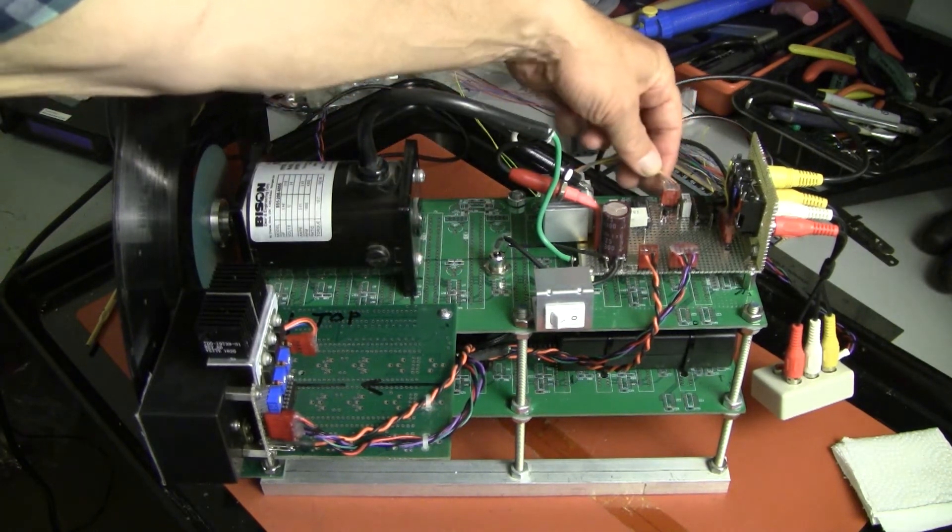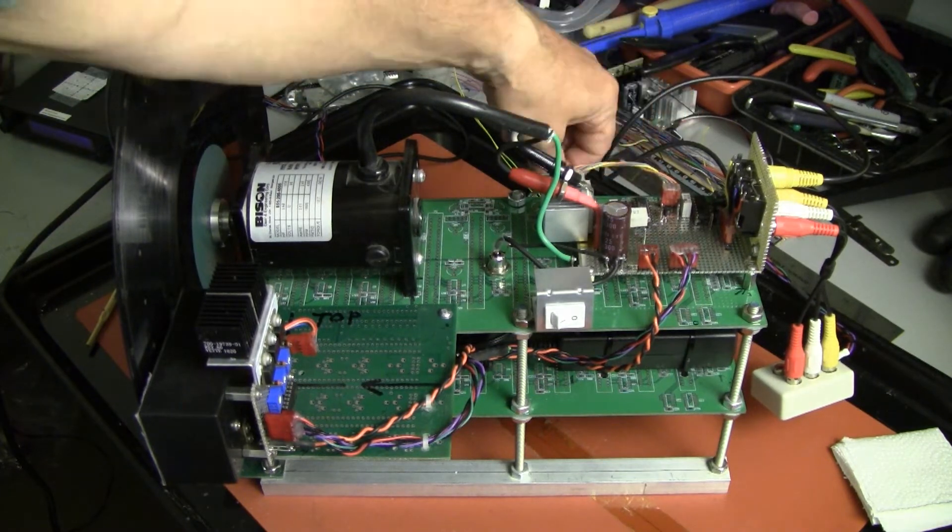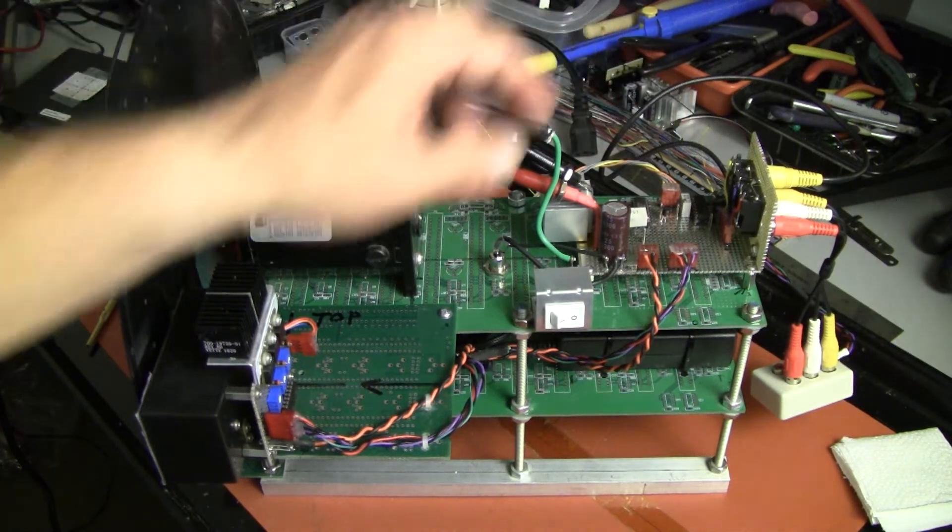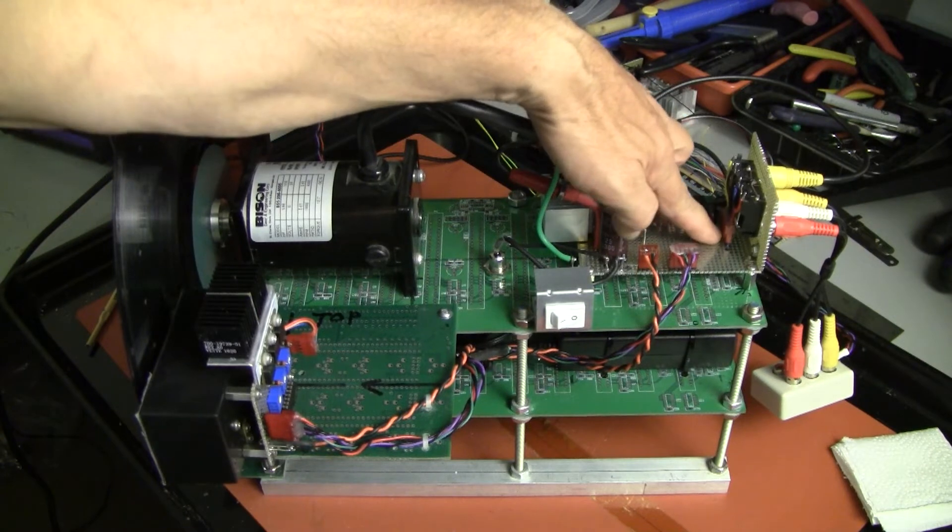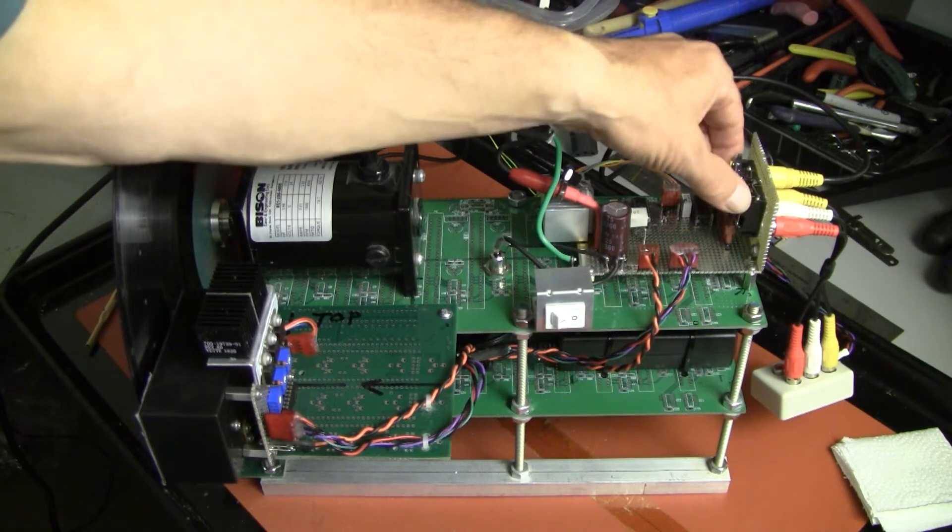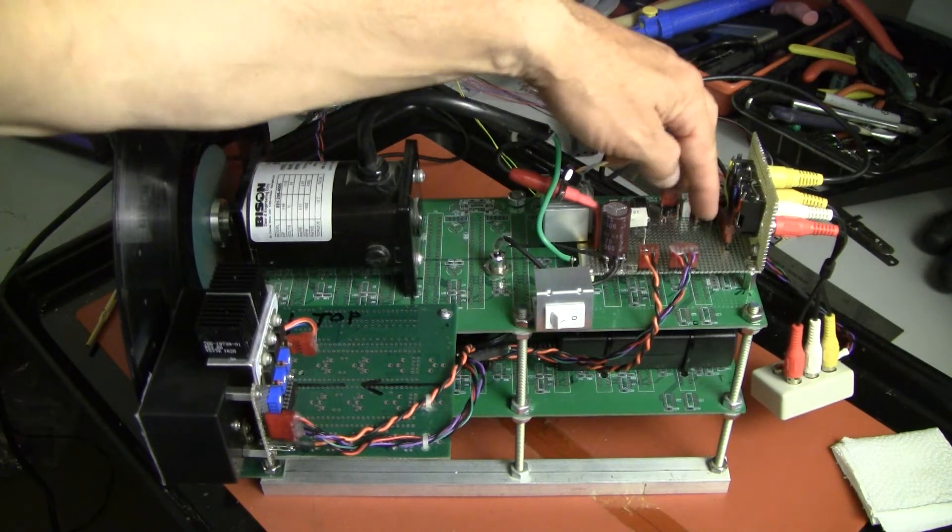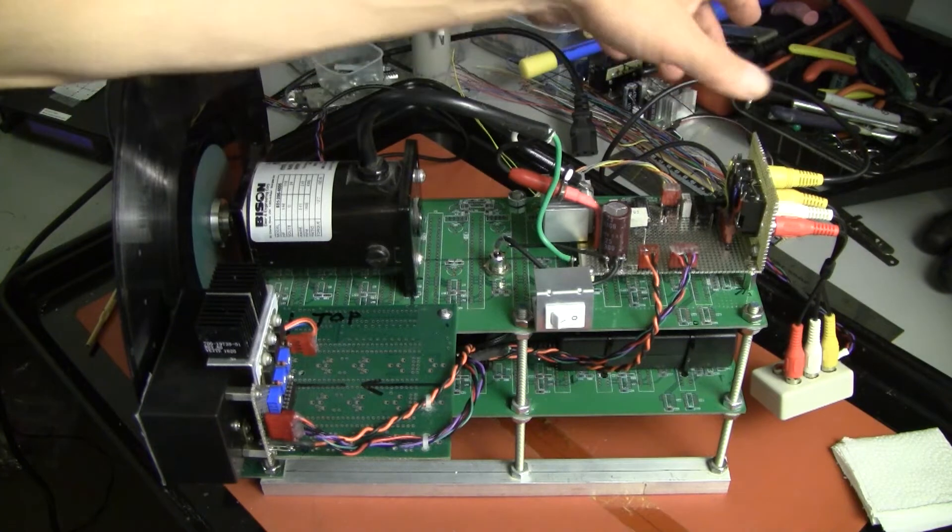This final plug over here, not the final one, but this plug is the Nipkow disk photo sensor feedback that detects the sync holes in the edge of the disk as it spins. And then there's one more plug right here that connects the input jacks to the main board and allows for removing the jack panel when I need to do any kind of servicing on this board.